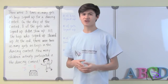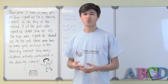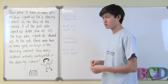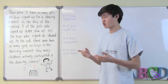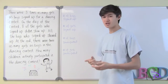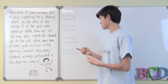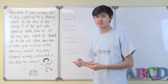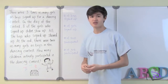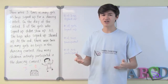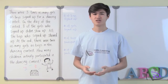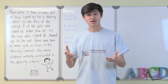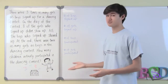This looks like a very complicated problem. We don't know the number of boys who signed up, we don't know the number of girls who signed up, we don't know the number of boys who participated, and we don't know the number of girls who participated. So there are a lot of unknowns, so let's try using a bar diagram to represent these unknowns.